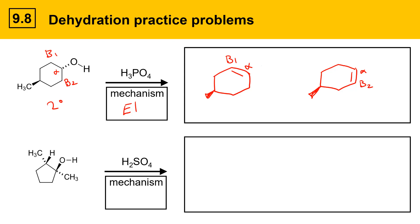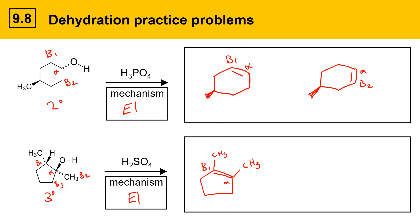In the lower example, we have a tertiary alcohol, which goes by E1 because it can give a nice stable carbocation. The OH group gets protonated, it leaves to give a carbocation, and that carbocation can be deprotonated in several ways. There's a beta 1 position, a beta 2 position, and a beta 3 position, so we need to consider all these options. One option is to have the double bond form between the alpha and beta 1 positions, leading to a tetrasubstituted alkene.